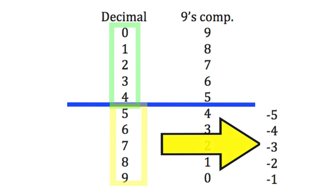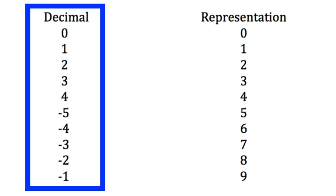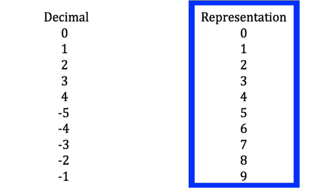Half will represent the positive numbers, and the other half will represent the negative numbers. So in decimal, this would be like the following, with the decimal numbers on this side and the 9's complement representation of these negative and positive numbers on the right.